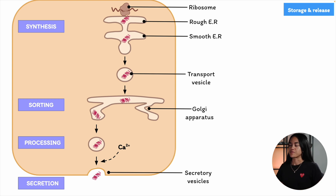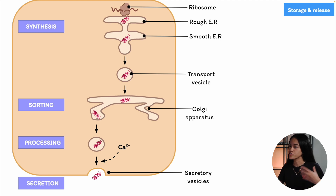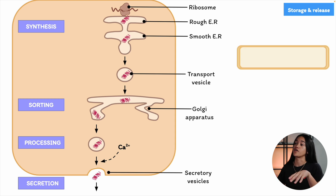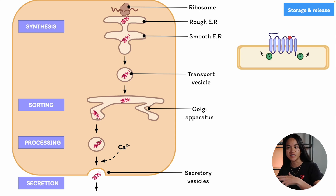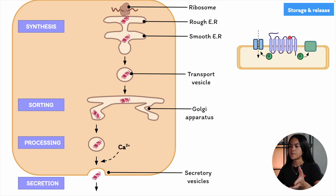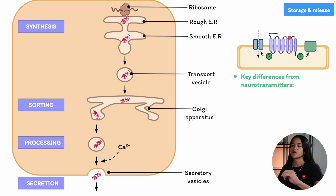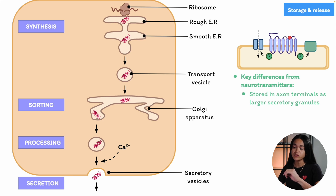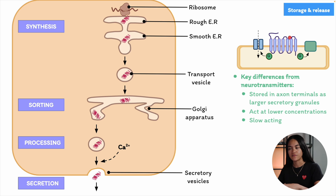Once released, peptides like neurotransmitters act on cell surface receptors, usually G-protein-coupled receptors, though there are some exceptions. Peptides differ from classical neurotransmitters in a few key ways: they are stored in axon terminals as large secretory granules, they act at lower concentrations, they are slower to take effect, and their actions last longer.